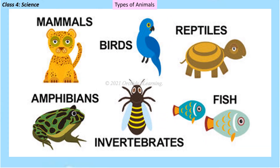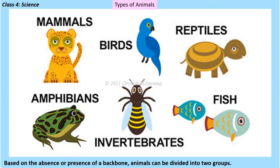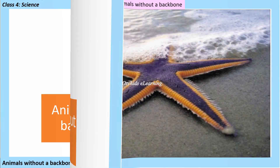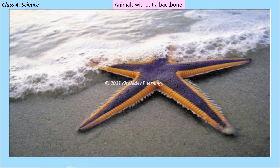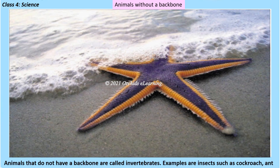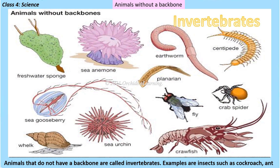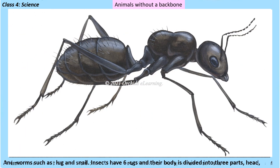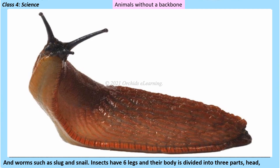Types of animals: based on the absence or presence of a backbone, animals can be divided into two groups — animals without a backbone and animals with a backbone. Animals that do not have a backbone are called invertebrates. Examples are insects such as cockroach, and worms such as slug and snail.